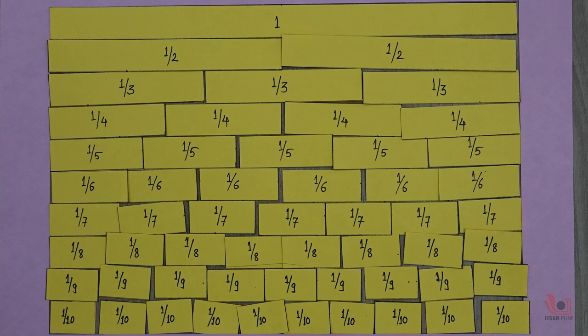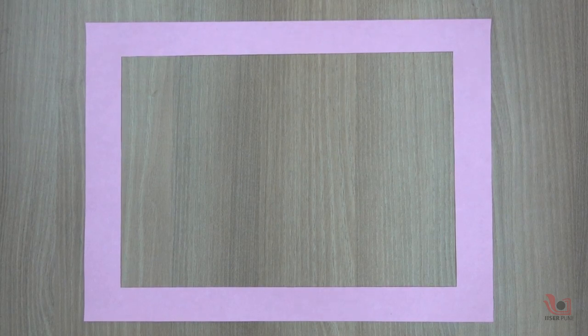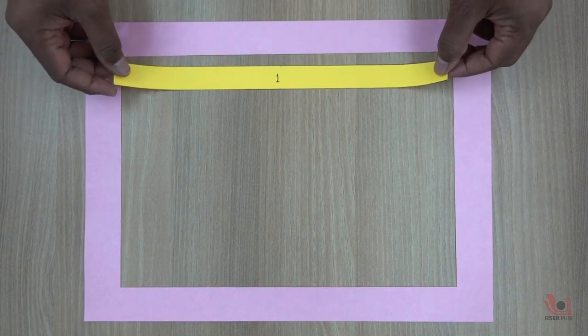After marking the horizontal and vertical lines on the paper, you can cut the paper on those lines so that each piece of the paper is different.